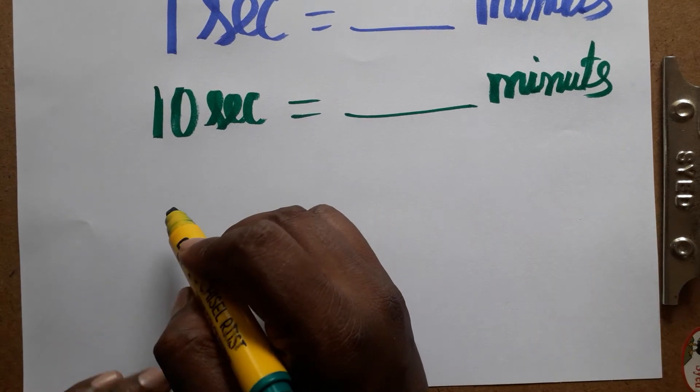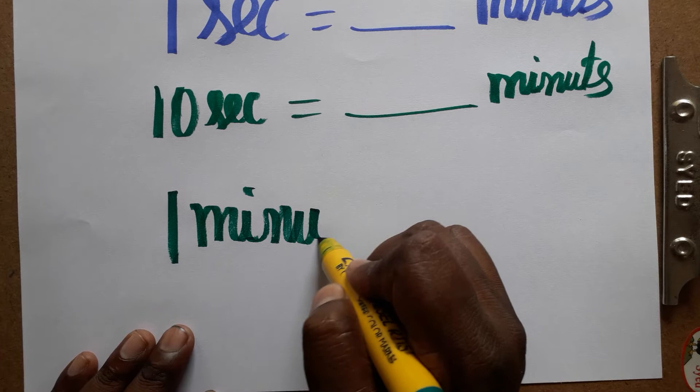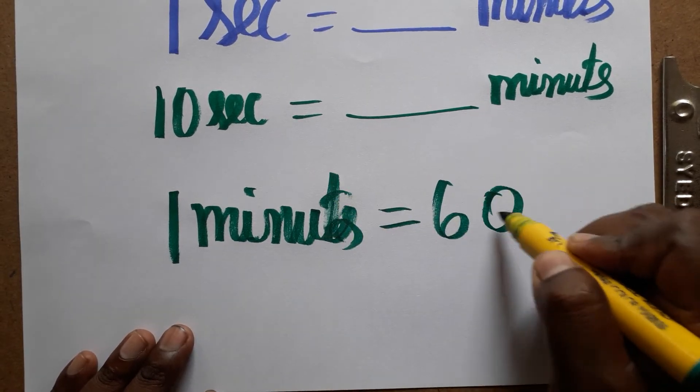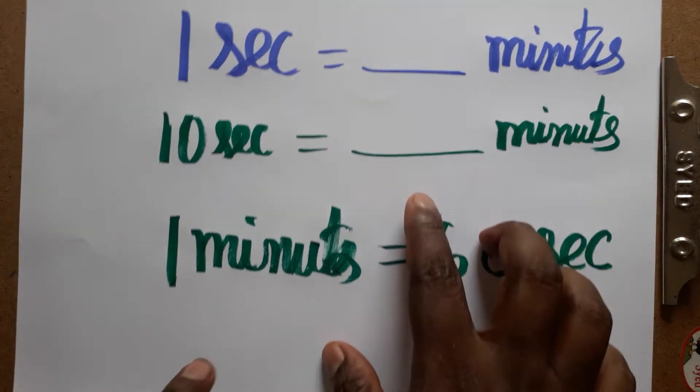First, we should know that 1 minute in a normal watch is 60 seconds. One minute is 60 seconds. Now the question is, 1 second is equal to how many minutes?